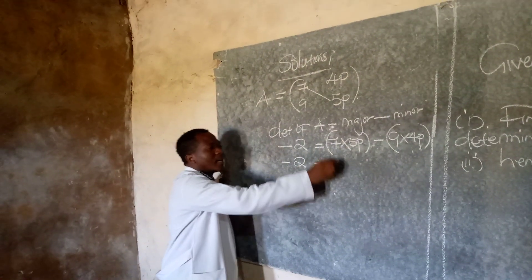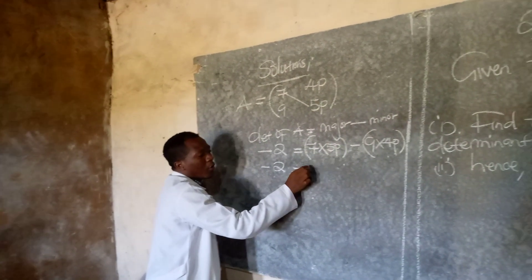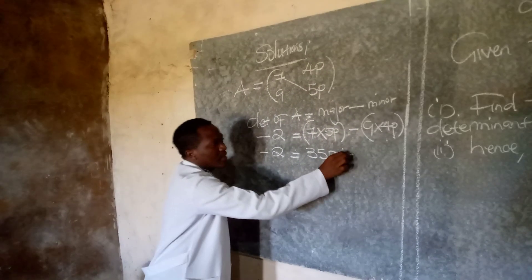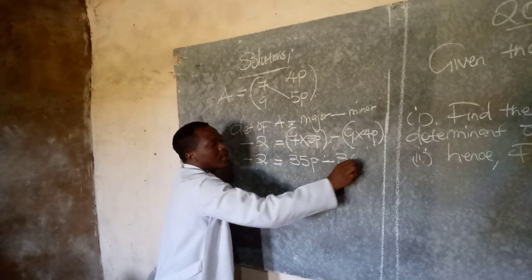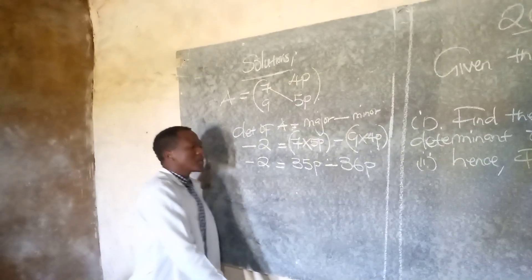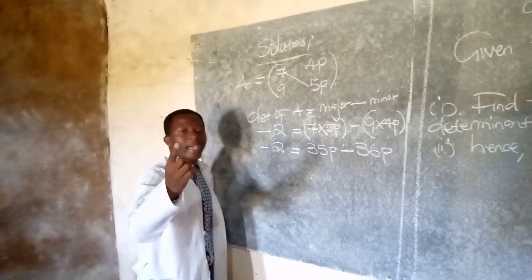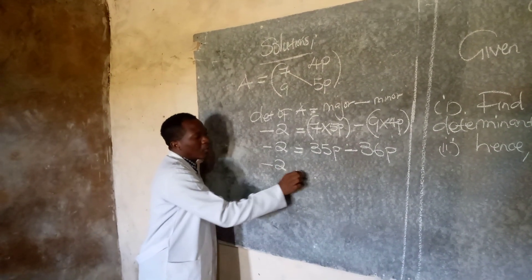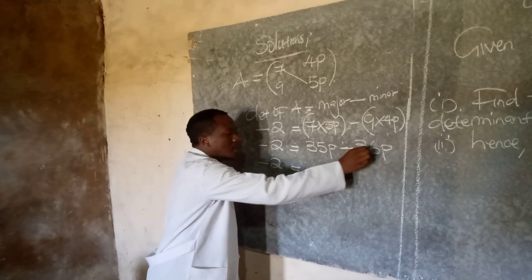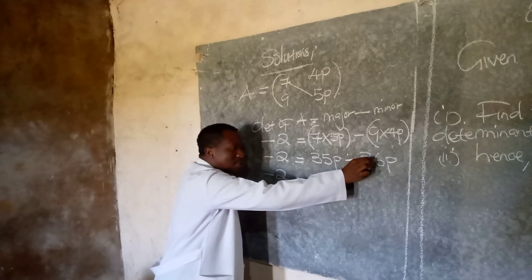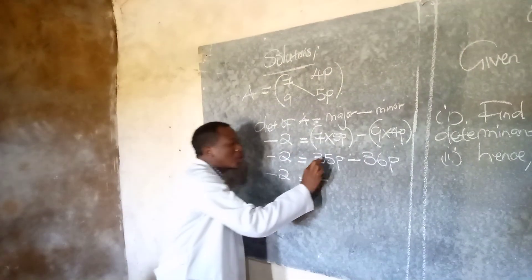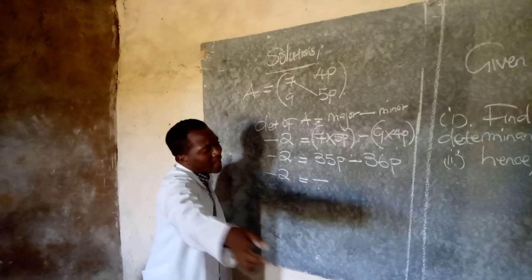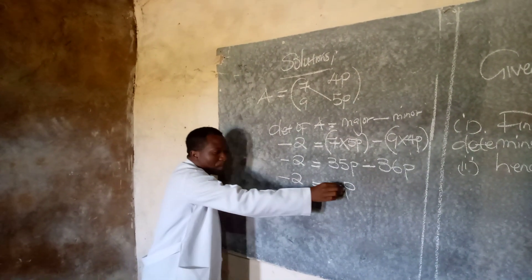So we say negative 2 equals 7 times 5B. We are going to get 35B. Minus 9 times 4B, which results in 36B. Now when we reach this stage, there is no need to collect like terms because the terms are already like terms. So negative 2 equals 35B minus 36B. Subtracting gives us negative B. So we write the letter B, which is negative.